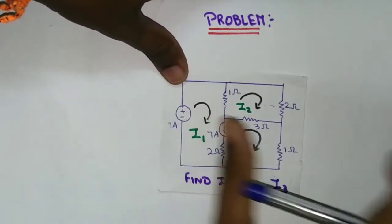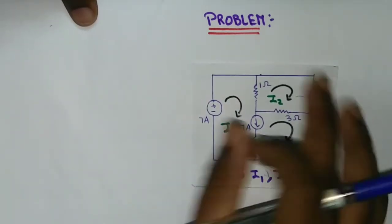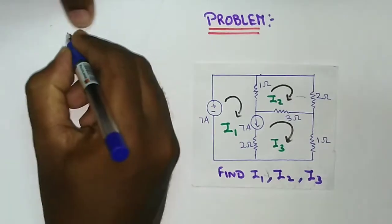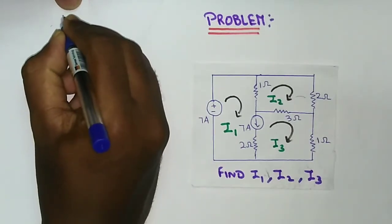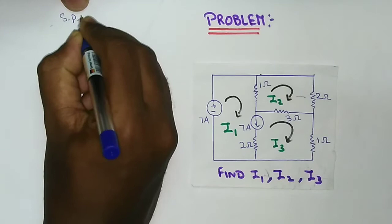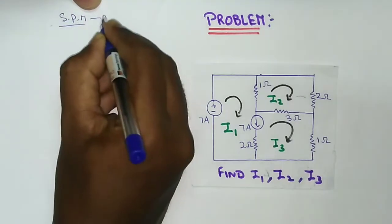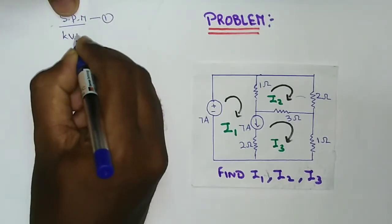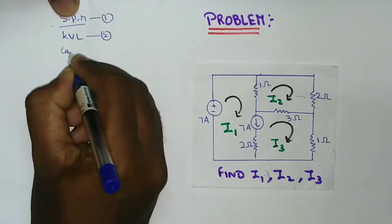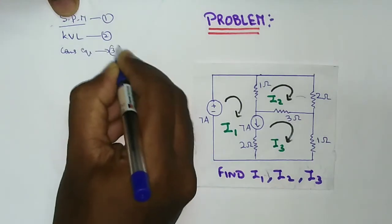We will talk about the 3 equations. The first one is the 1st equation. The second one is the KVL. The second one is the constraint. The next one is the constraint — the third one is the short one.